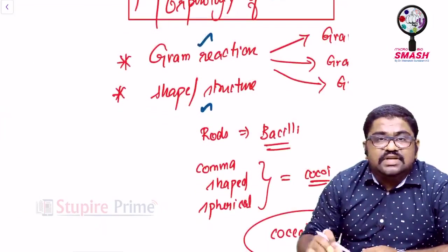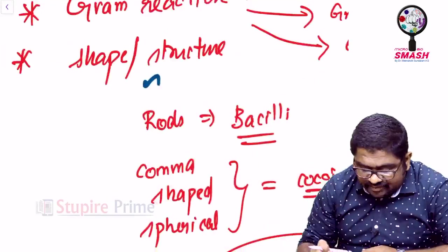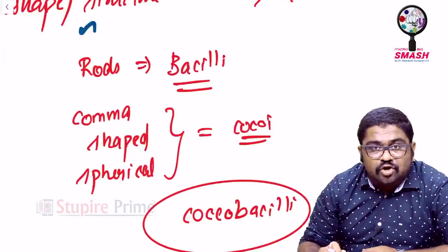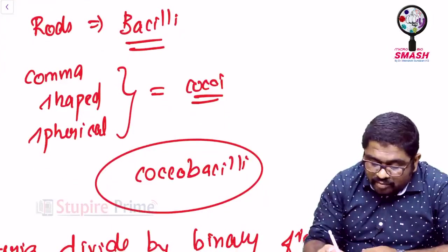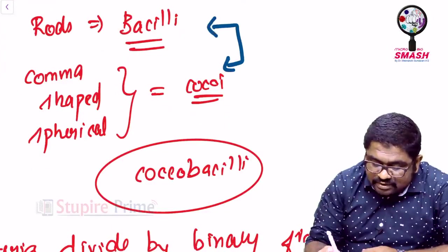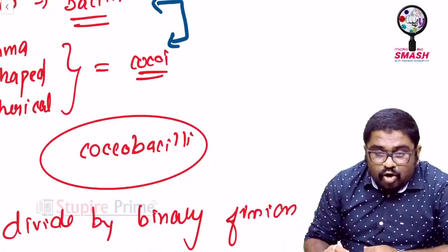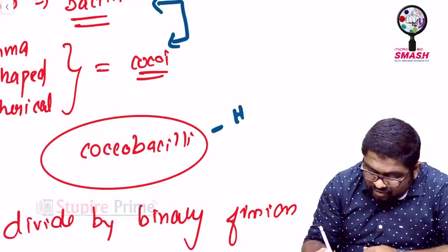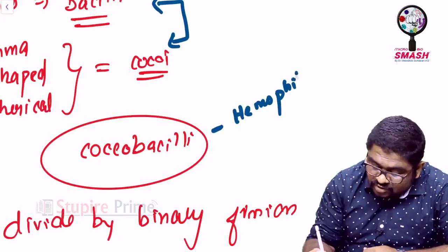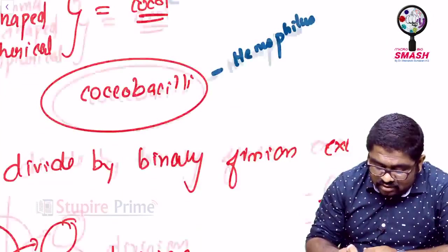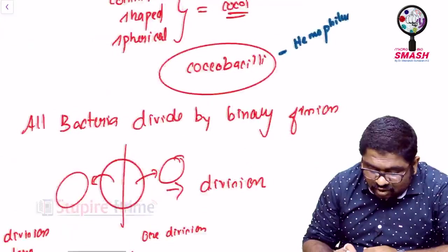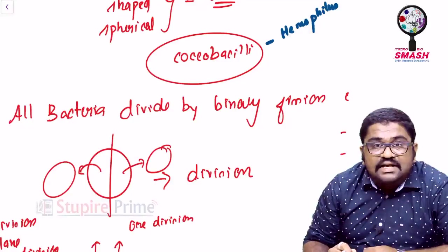If an organism is like a rod, you call it as bacilli. If it is comma-shaped or spherical, you call them as cocci. In case of a combination called as both, some can exhibit both-like activities. A coccobacilli, example, Haemophilus. Sometimes, Yersinia. These organisms, all of them, divide by binary fission.